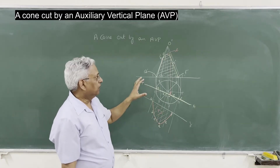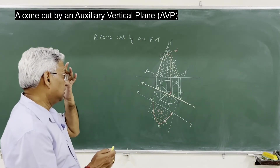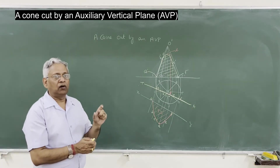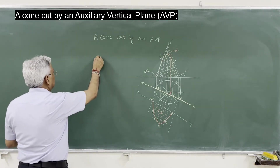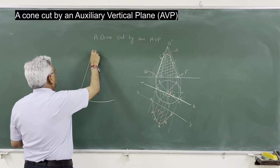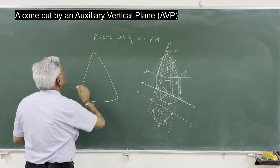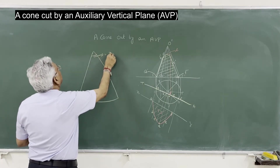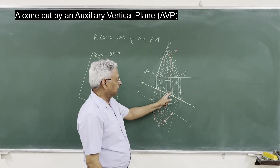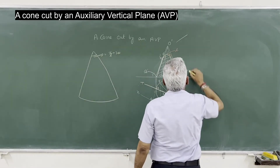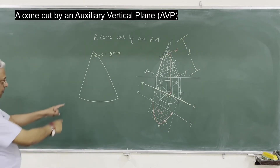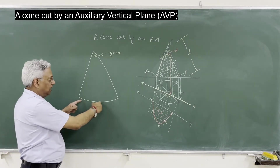For the development of the part of the solid after cutting by the vertical plane, the first step is to draw the complete development of the solid. For that, you need to draw a circular arc of radius R, which subtends an angle theta = (R / L) × 360 degrees, where R is the radius of the base and L is the slant height of the cone. This arc gives the complete development of the solid.